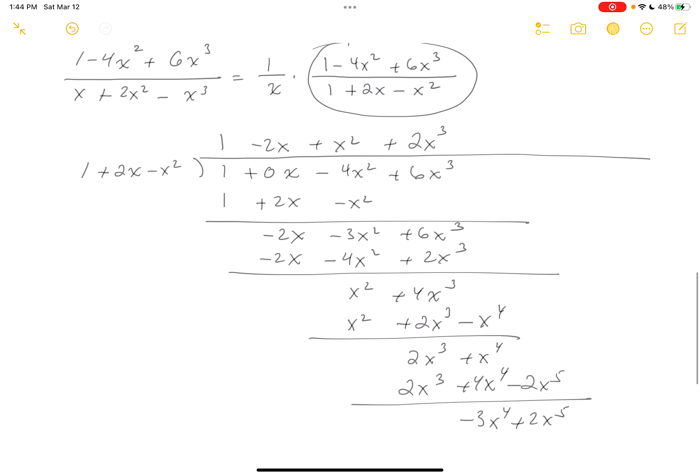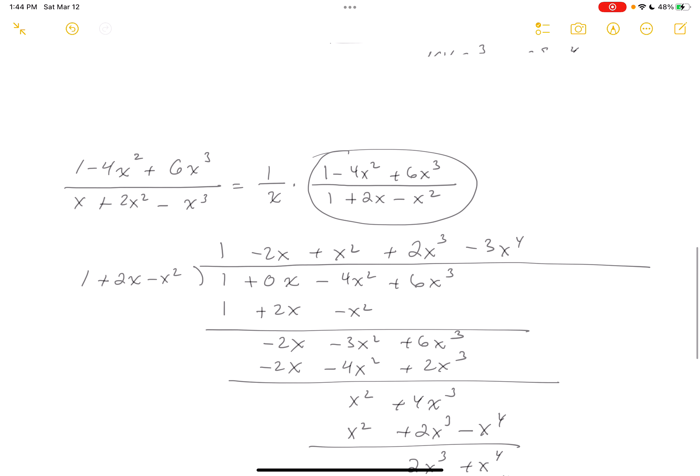Repeat. Minus 3x4. By the way, I'm not going to write that down because I have 1, 2, 3, 4, 5 terms now. What am I going to do? Well, I'm going to write it down. So it's 1 over x times 1 minus 2x plus x squared plus 2x cubed minus 3x4, and so on.